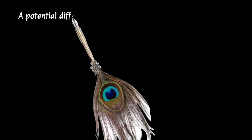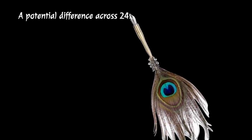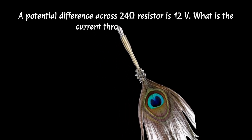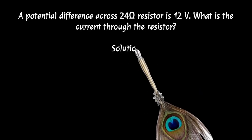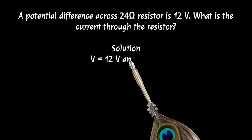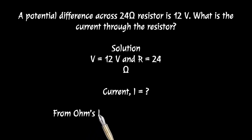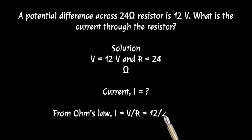We shall see the example. A potential difference across a 24 Ohm resistor is 12V. What is the current through the resistor? Solution: V is equal to 12V and R is equal to 24 Ohm. Current I is equal to what? From Ohm's law, I is equal to V by R. So V is equal to 12 and R is equal to 24. So 12 by 24 is equal to 0.5 Ampere.